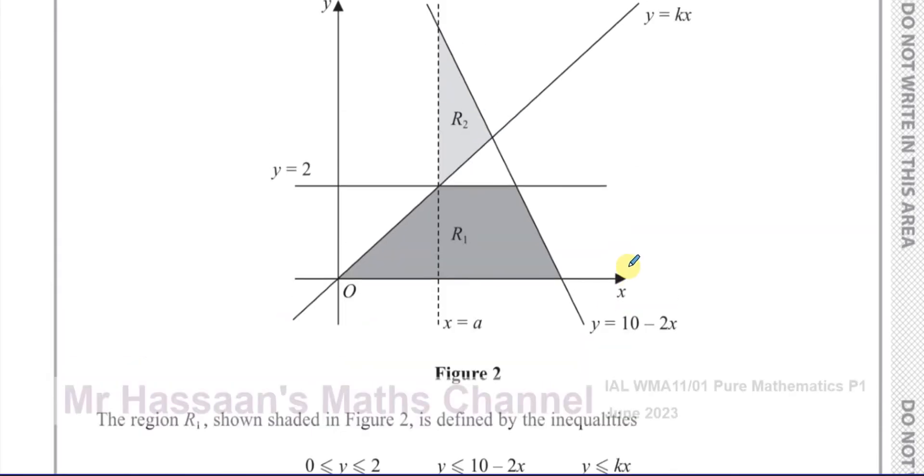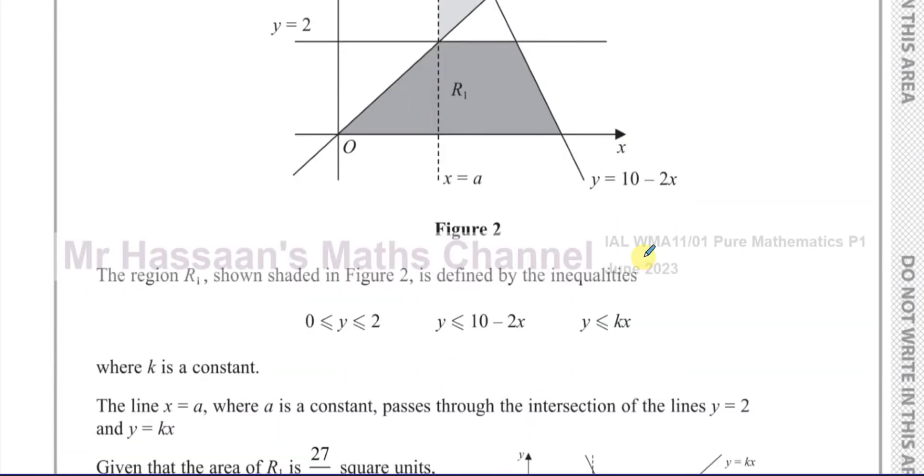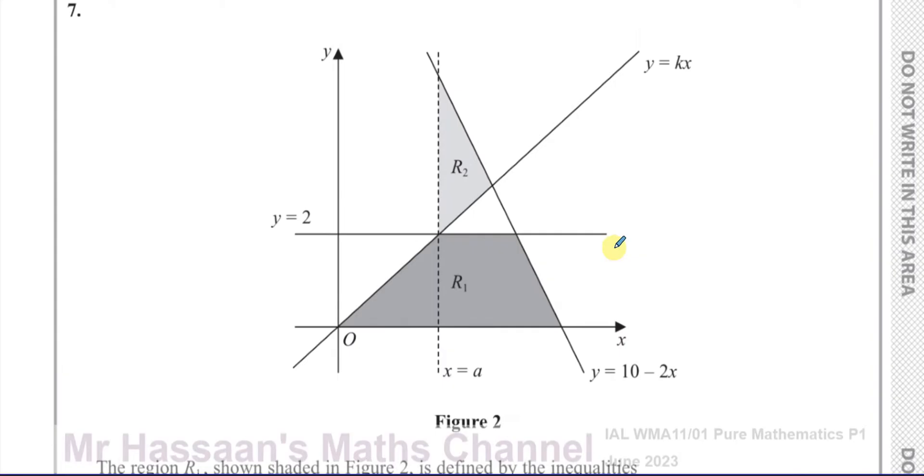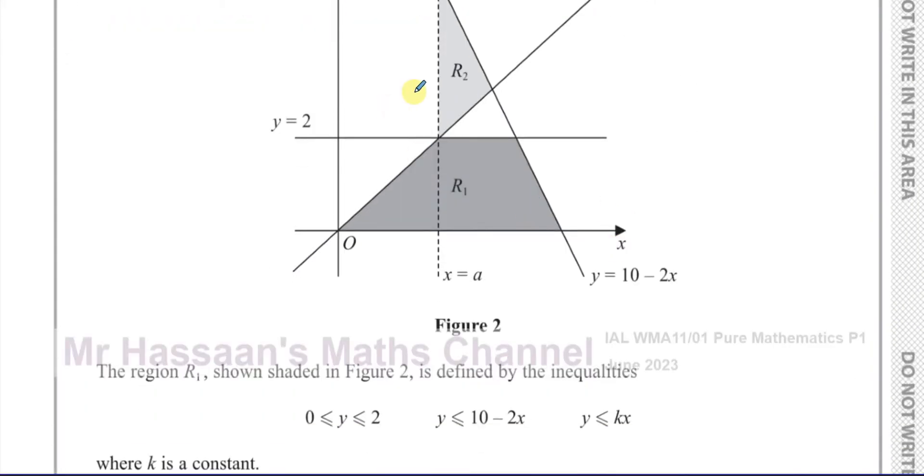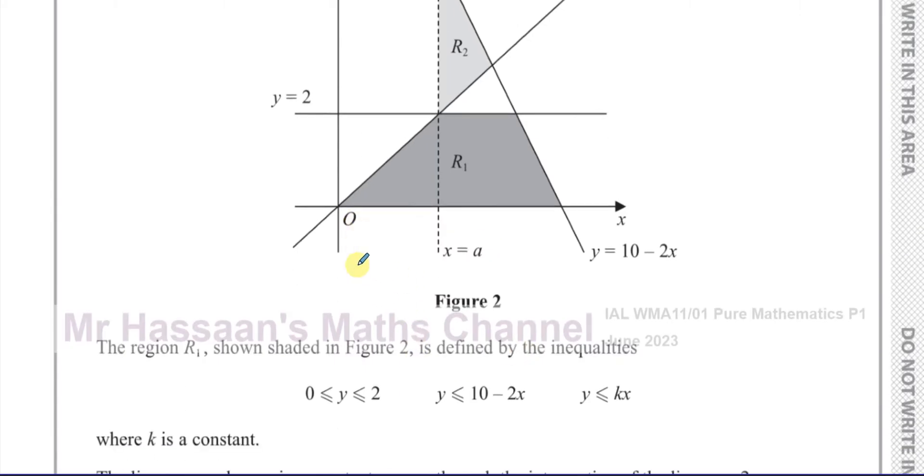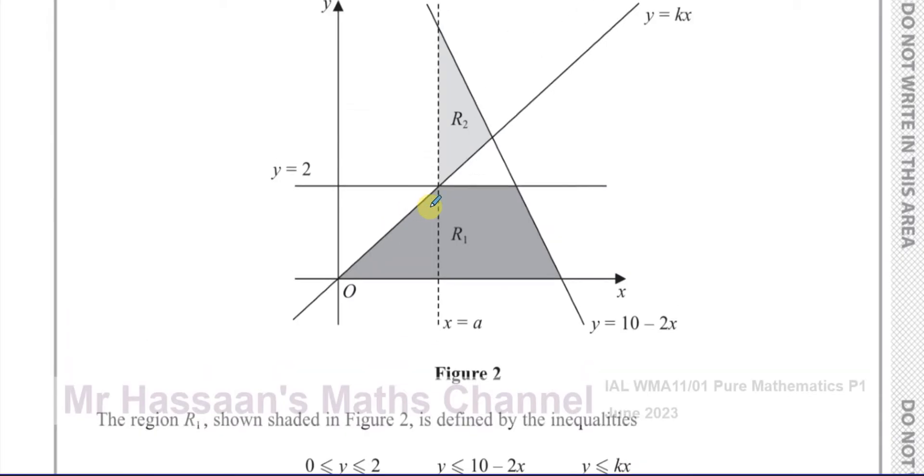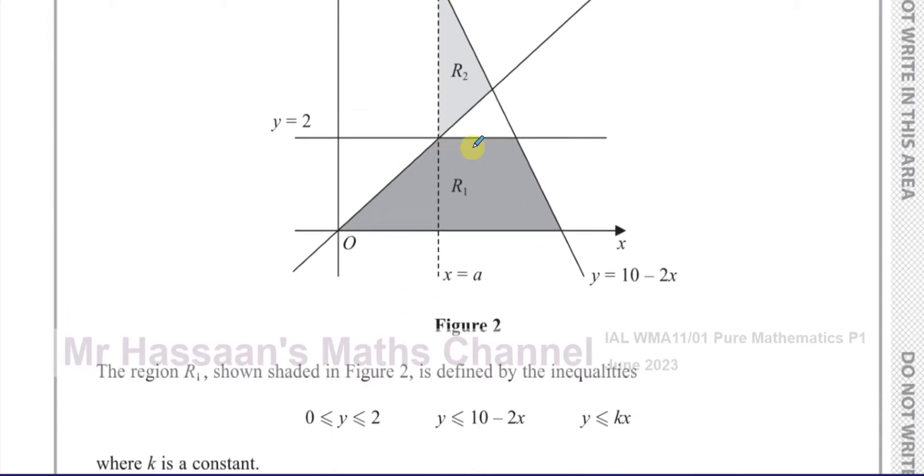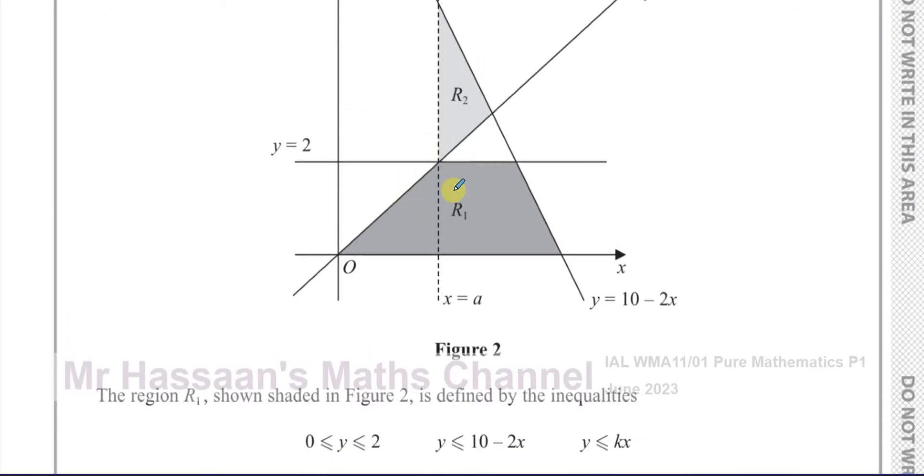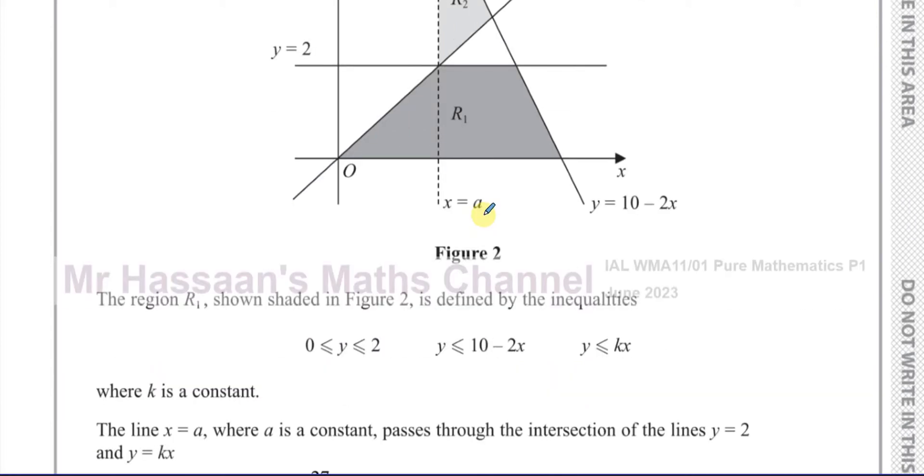This question seems to be about inequalities and regions and straight line graphs. The region R1 shown shaded in figure 2, it's like this trapezium shape here, is defined by the inequalities y is between 0 and 2, y is less than or equal to 10 minus 2x, and y is less than or equal to kx. That's that shaded region here, that trapezium shape.